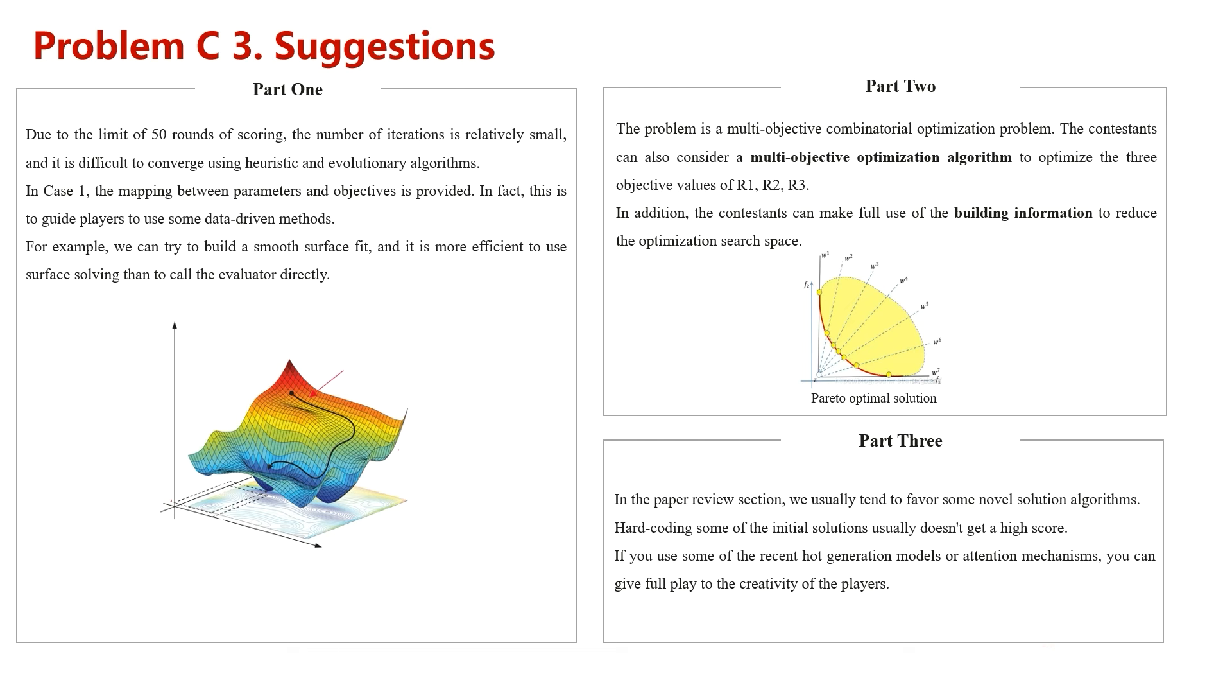Since we have three objectives, you must consider a multi-objective optimization algorithm. Maybe finding a Pareto front is a good way to try. Don't forget the building information. It is very useful in this task. In the paper review section, we usually tend to favor some novel solution algorithms. We will be very glad to see if you have used some attention mechanisms or generation models. Good luck everyone!